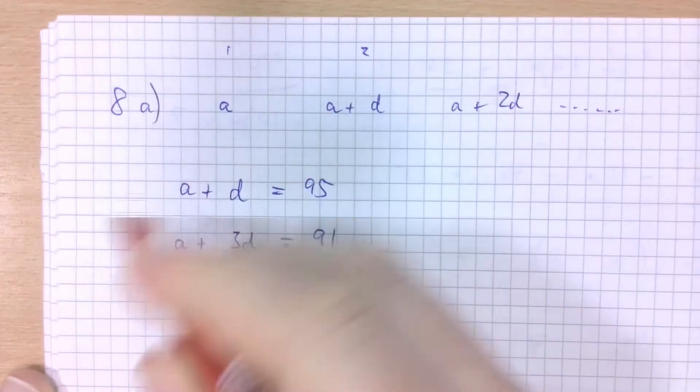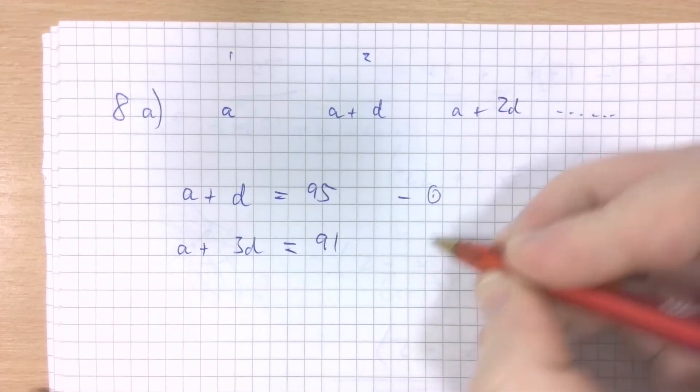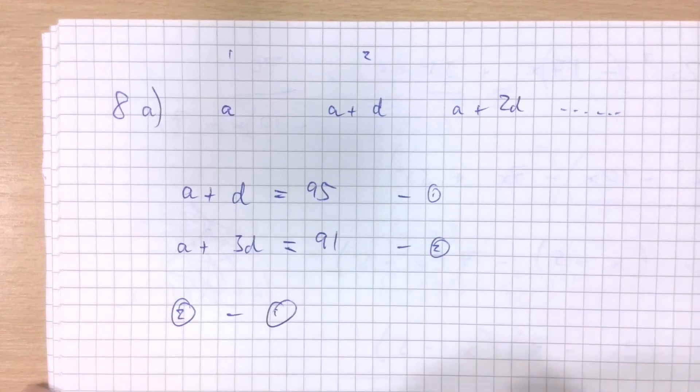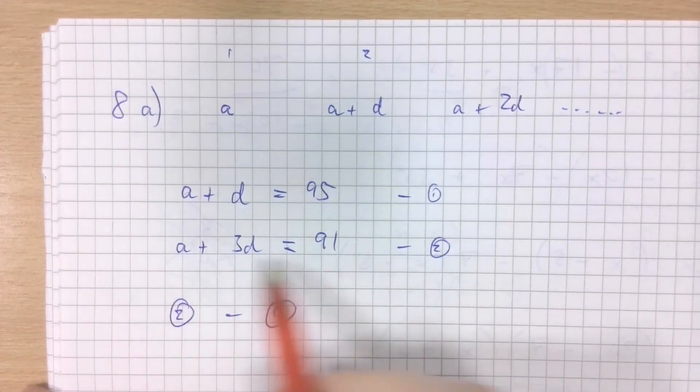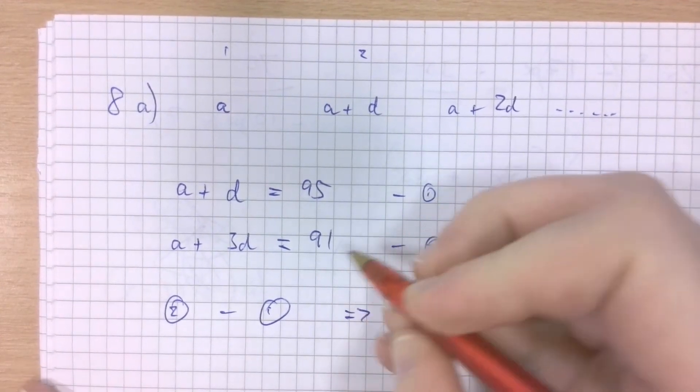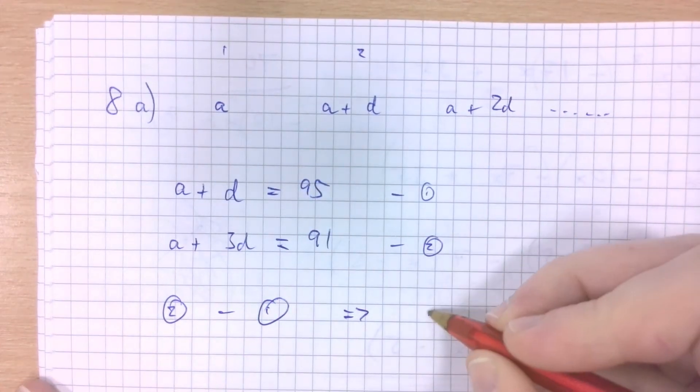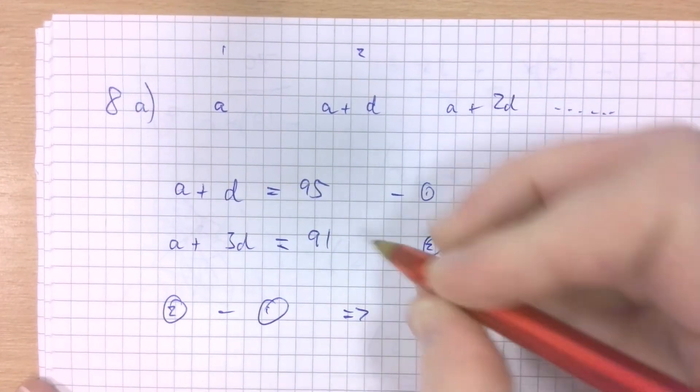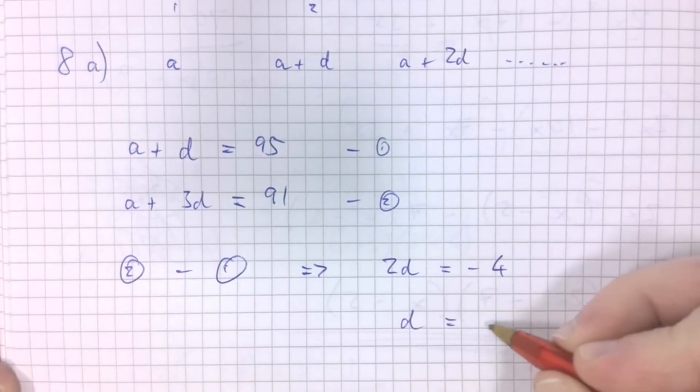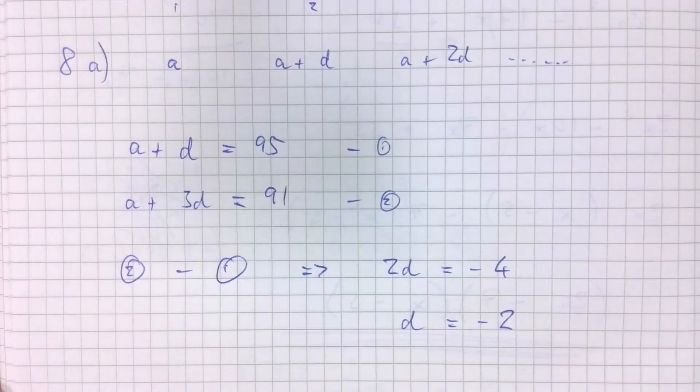Oh, that's interesting. What I've got here is a pair of simultaneous equations. If I label this one as 1 and this one as 2, and then enact 2 take away 1, that is this equation take away this equation, I'm left with: a plus 3d, a take away a is nothing, 3d take away d is 2d, and 91 take away 95 is negative 4. So for this question, the difference is actually negative, negative 2 every time.